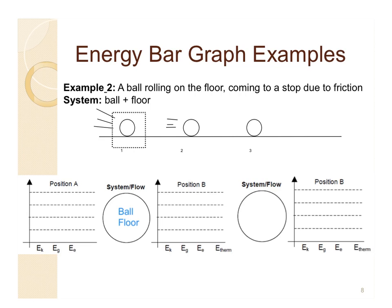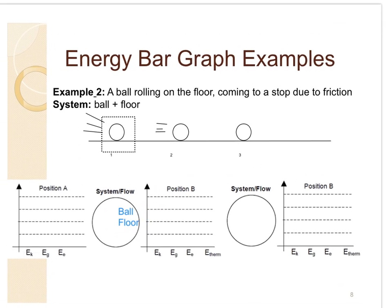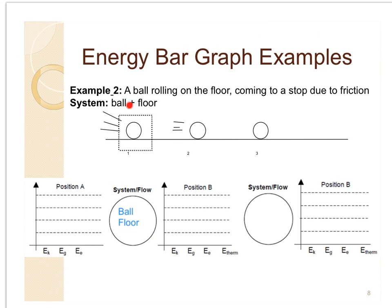Then we look at each position and decide how energy is stored at that point. For position A, the ball is moving but doesn't seem to be changing height, so the gravitational energy equals zero point is at floor level, and there are no springs involved. So at position A it looks like we only have kinetic energy.